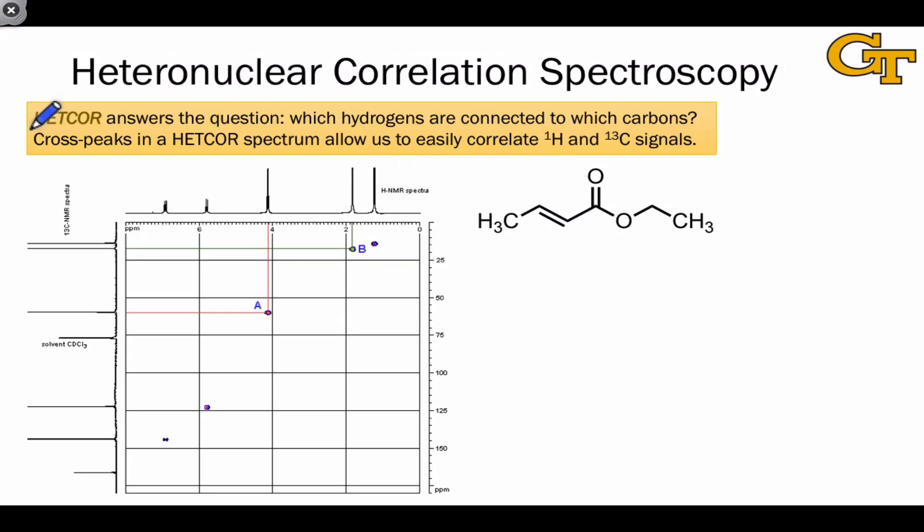HETCOR has a similar goal of helping us figure out what's coupled to what within a pair of spectra, one of which is plotted on the x-axis and one that's plotted on the y-axis. But HETCOR is different because it's heteronuclear. It tells us what hydrogens are coupled to what carbons, and since coupling means connectivity, the real structural question it answers is what hydrogens are connected to what carbons. Here we don't actually want to draw a diagonal through the spectra because we're plotting two different spectra on the x and y-axis.